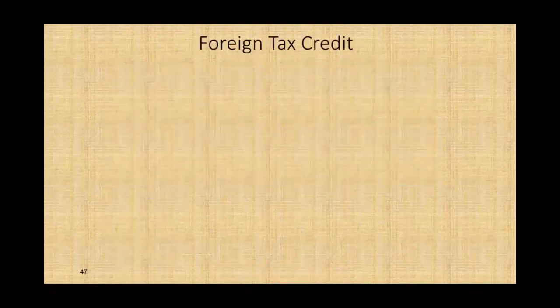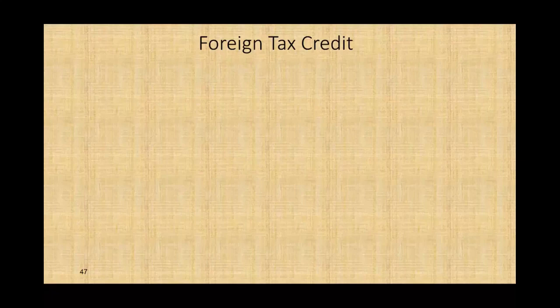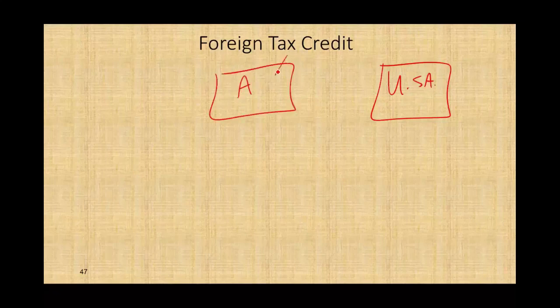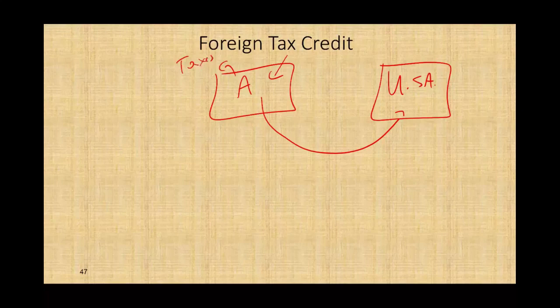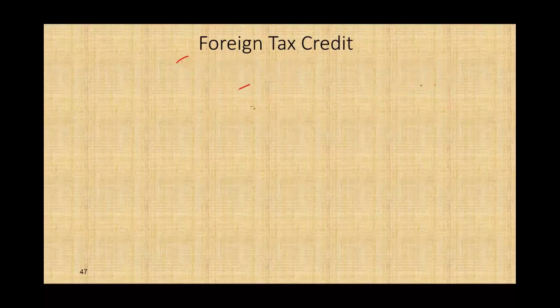Today we're going to be working with the foreign tax credit. What is it and what's the purpose? The purpose is to avoid double taxation. U.S. citizens and green card holders must report income whether it's earned in the U.S. or outside the U.S. — it's all subject to taxation in the U.S. So if you make money in Country A, you're going to pay taxes there, but you're also going to pay taxes on the same income in the U.S.A. That's double taxation. The U.S. government says, as long as we have an agreement with that country and it doesn't support terrorism, we'll give you a credit. Let's take a look at the rules.